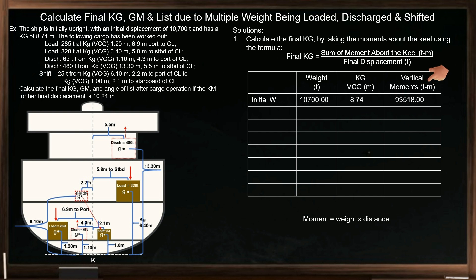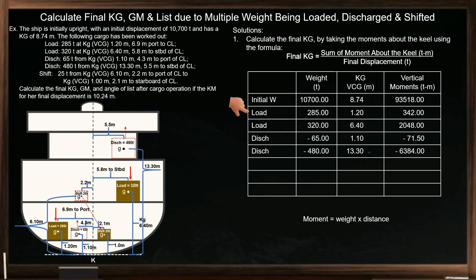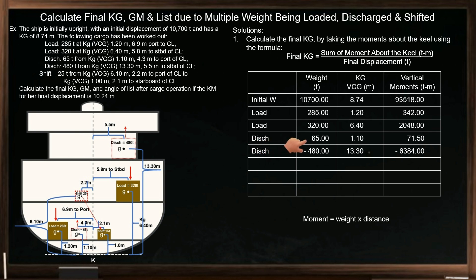I emphasize 'vertical moment' since the distance used is the vertical distance from the keel to the center of gravity. Next, enter the loaded and discharged weights in the second column and their respective KG in the third column. Multiply each weight by its corresponding KG to determine the vertical moment for each entry. For discharged weights, the sign is negative, as these will be subtracted to find the ship's final displacement and total vertical moment.